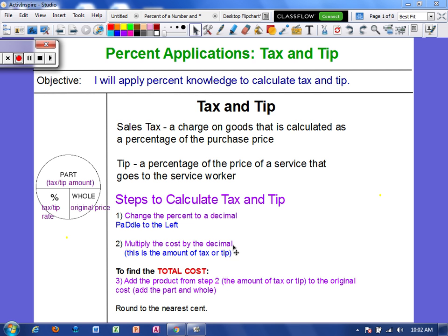If we are finding the tax or tip amount, which means the part is missing, we would multiply the cost by the decimal, so the percent times the whole. If we're finding the total cost, we are just going to add the tax or tip amount to the original price to get the total. And we're going to do some examples together.